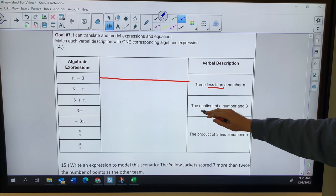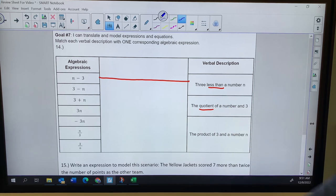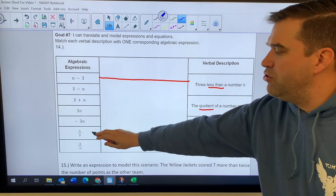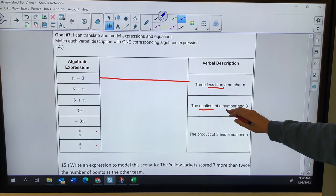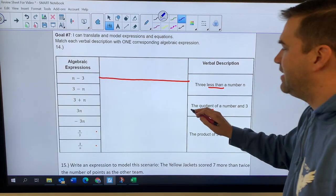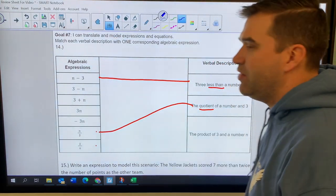The quotient of a number and three. The quotient tells me division, so I'm looking for division. There are two division problems here. N divided by three or three divided by N. Since it's a quotient of a number and three, three came second. So three is going to go in the denominator.